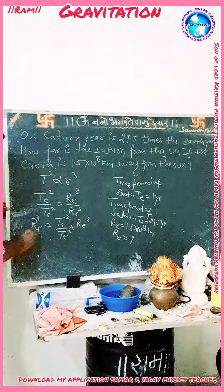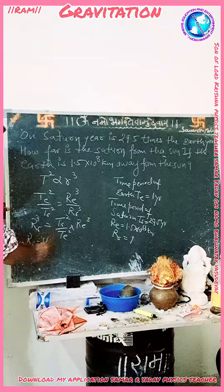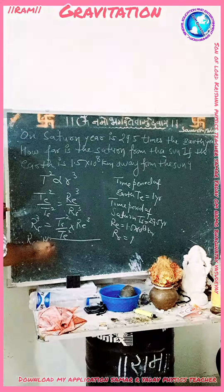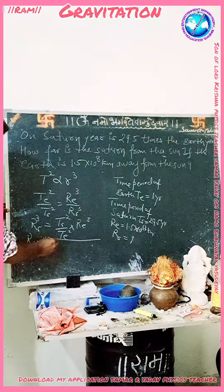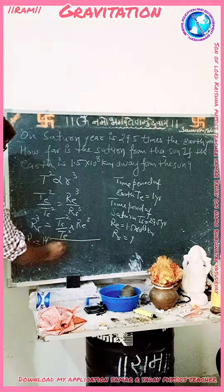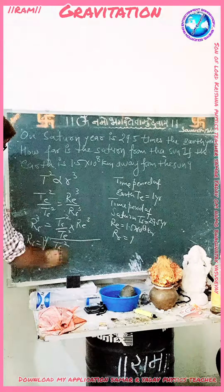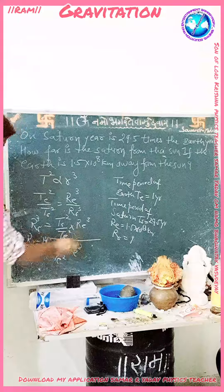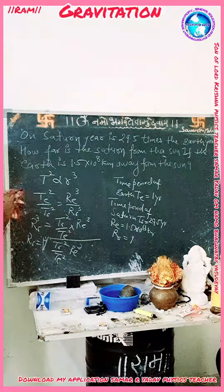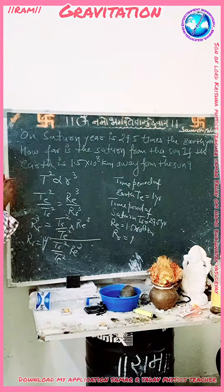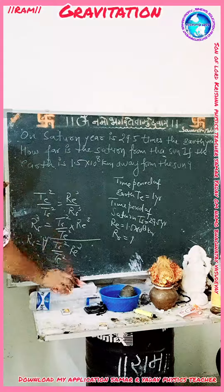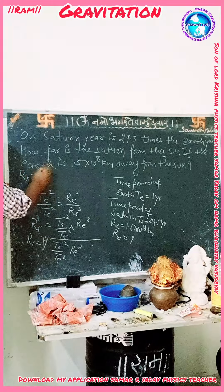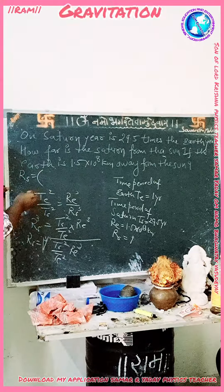Rs cubed is equal to Ts squared upon Te squared, multiplied by Re cubed. Therefore, Rs is equal to the cube root of Ts squared upon Te squared, multiplied by Re cubed. Now keeping the values here, we will substitute them.